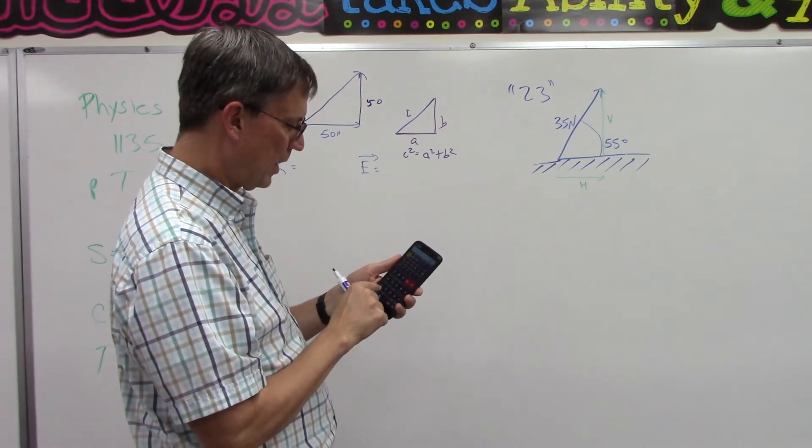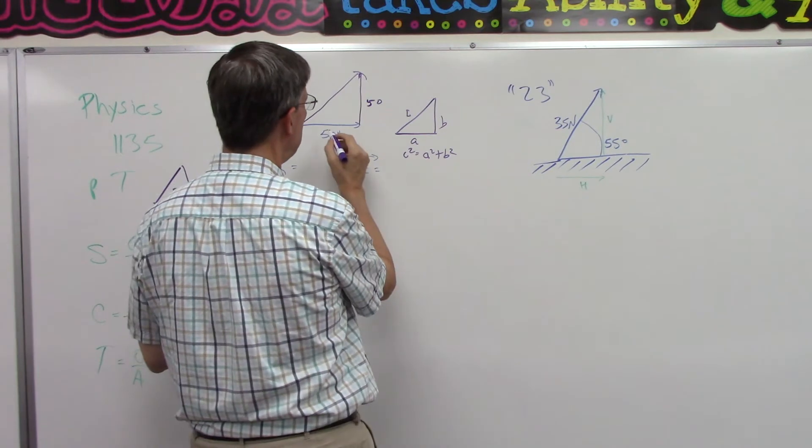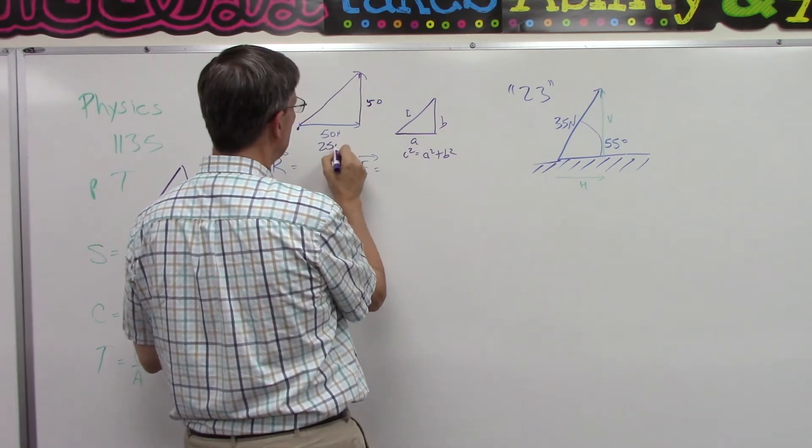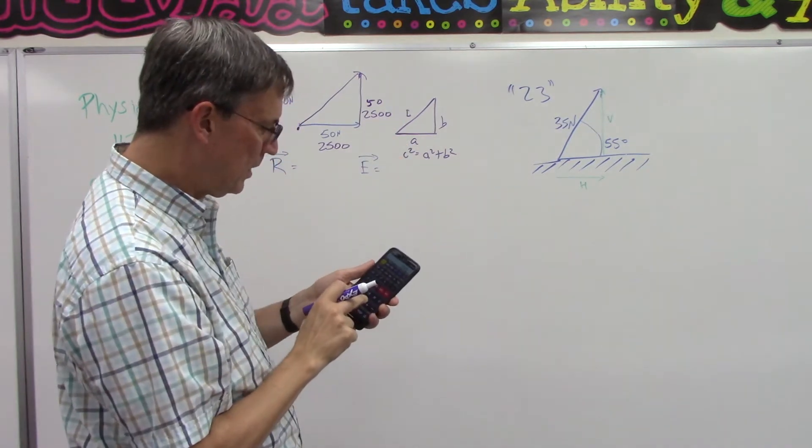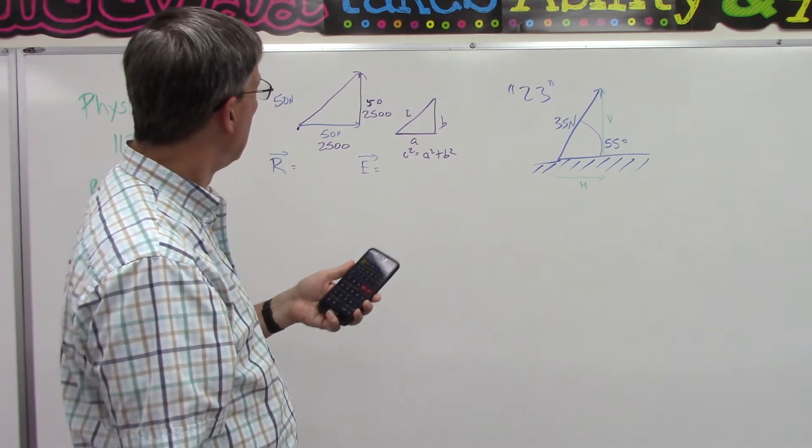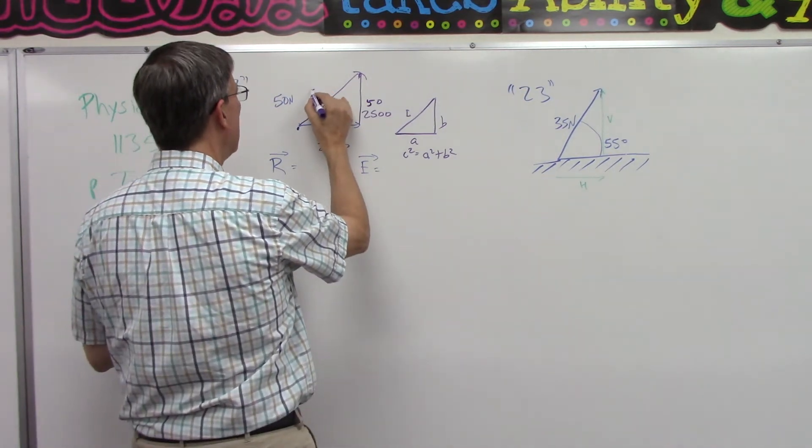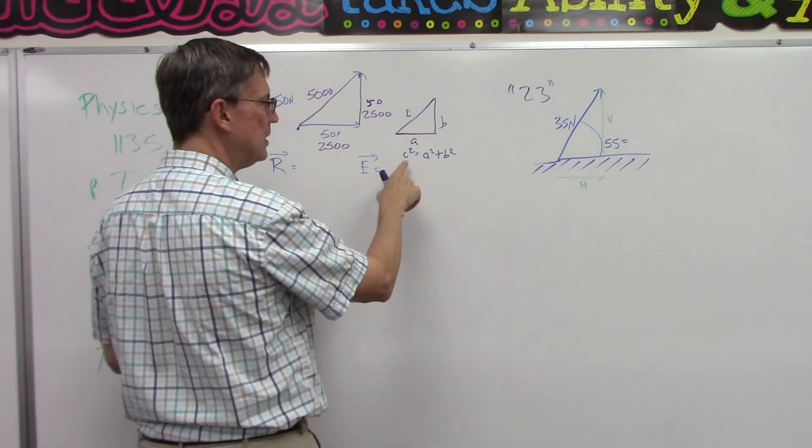Whoops, I did times negative 5, that's not good. 2,500 would be this side squared. It's going to be the same for that. So now we can add them together. And we get 5,000 for the hypotenuse, but that's not the answer, okay? Because that's C squared.